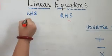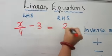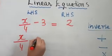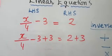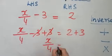x/4 - 3 = 2. Now first we will eliminate the -3 by adding 3 to it. RHS also plus 3. Minus 3 plus 3 will get cancelled. x/4 = 2 + 3, which is 5.